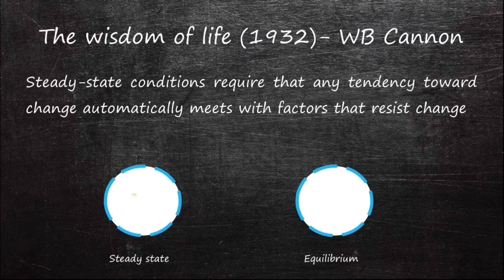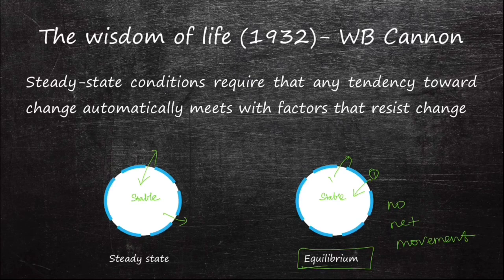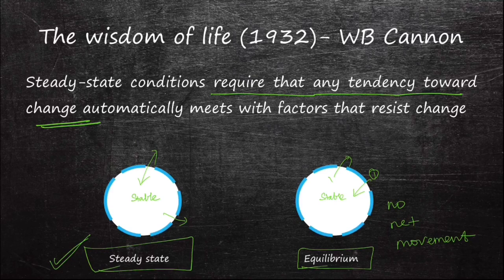A stable state also occurs in equilibrium, where the internal environment is constant because there is no net exchange with the environment. However, equilibrium is not compatible with life, because sustaining life processes requires energy gained from the environment, and waste products must be lost to the environment. So the condition maintained within the body — a constant internal environment despite continuous exchange with the environment — is called a steady state. Steady state conditions require that tendencies toward change are automatically met with factors that resist the change.